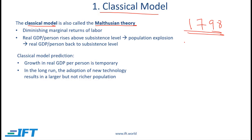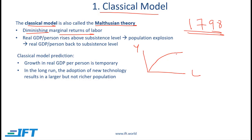You can imagine that in a farming-based economy we will have diminishing marginal returns of labour. In other words, as we keep adding more labour, output initially goes up rapidly but eventually output will increase at a decreasing rate.